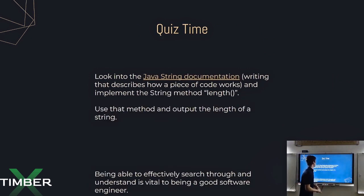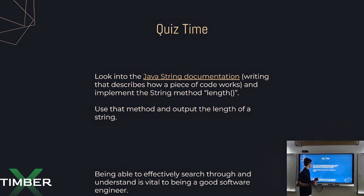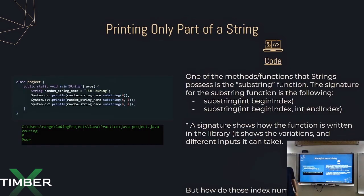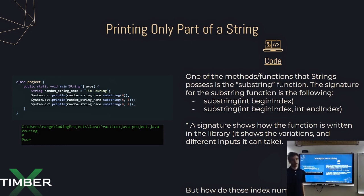Now, look into the Java string documentation — writing that describes how a piece of code works — and implement the string method length. Use that method and output the length of a string. Being able to effectively search through and understand documentation is vital to becoming a good software engineer. We're going to implement it the same way as substring: instead of random_string_name.substring(4), we do dot length with nothing in the parentheses, and that outputs the length of that string.